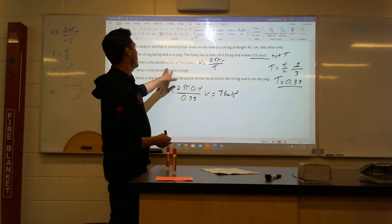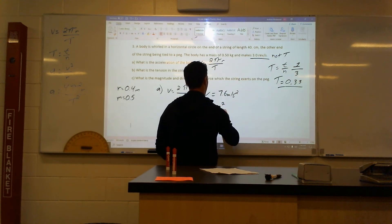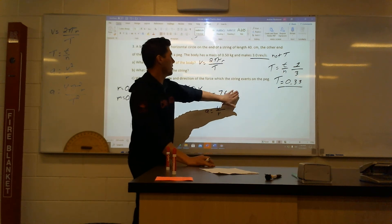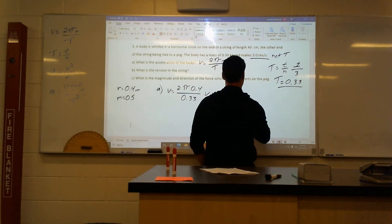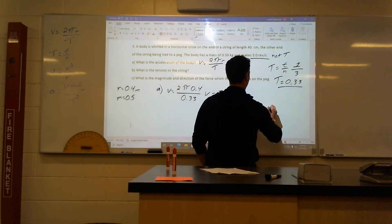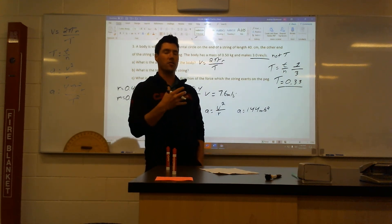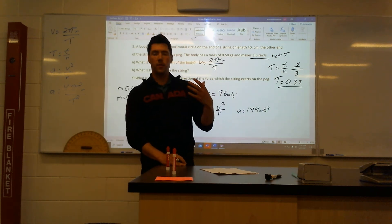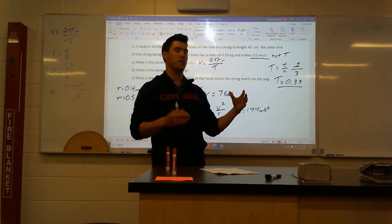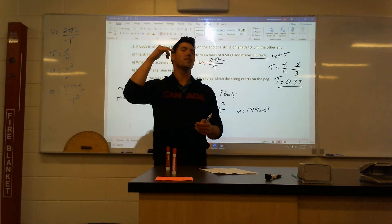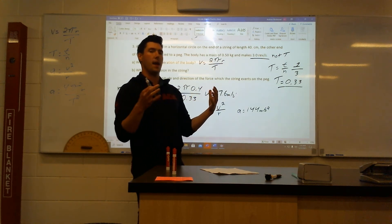Now let's get the acceleration. Acceleration equals v squared over r. When I put 7.6 squared and divide by 0.4, I get an acceleration of 144 meters per second squared. That is a very large acceleration, but it just means that's how fast it has to keep changing direction in this very small circle to stay on a circular path. The accelerations in circular motion can get very large compared to velocities — the shorter the radius, the faster it has to consistently change direction.